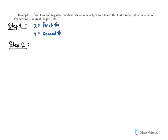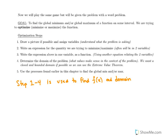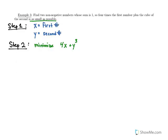Step 2: we're trying to minimize because we want the expression as small as possible. The expression is four times the first number plus the cube of the second — that's 4x + y³. We're trying to minimize 4x + y³. This is given in two variables x and y, which is an issue since we don't know how to deal with two-variable expressions directly.